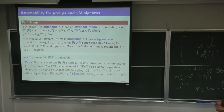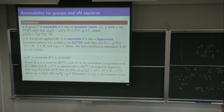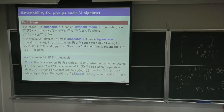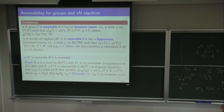Conversely, if Γ is amenable and I have an invariant mean φ on ℓ^∞(Γ), I can take a sort of integral — averaging over the unitaries u_g. I'm taking an extension τ̃ of the trace τ on M to a state on B(L²(M)), and then averaging that. This averaging will give you a state on B with the canonical unitaries u_H in its centralizer.